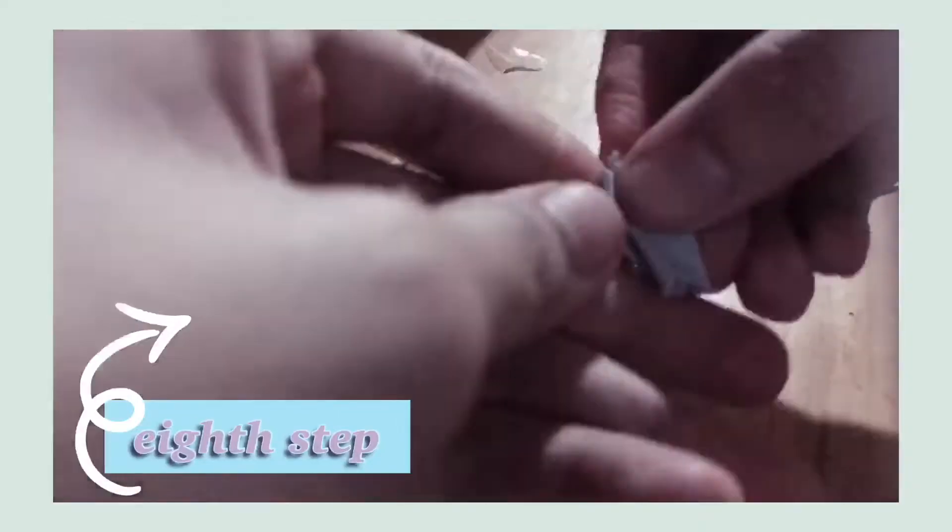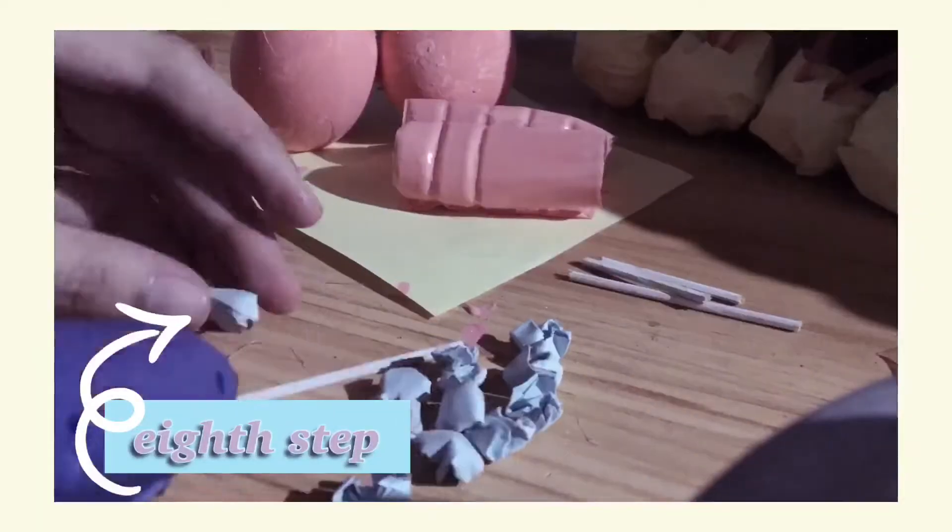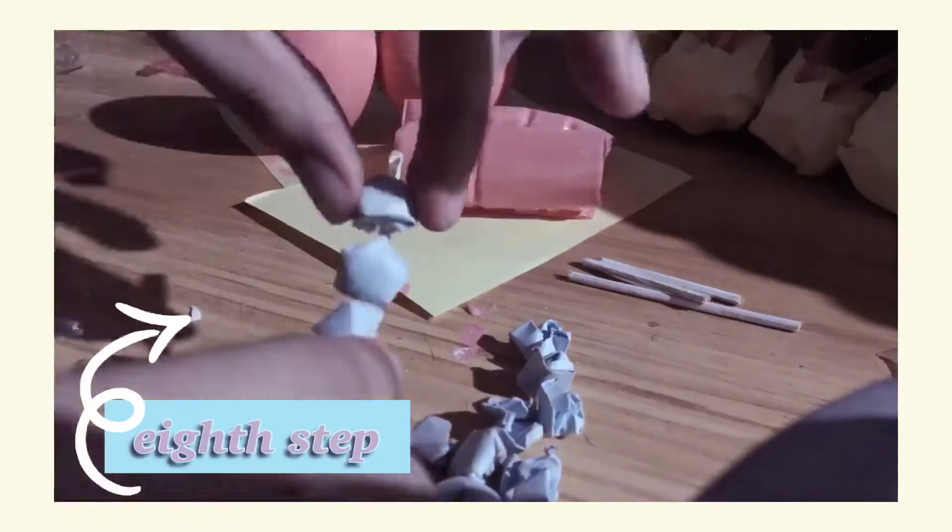Cut the sticks into smaller pieces and crumple the construction papers into smaller pieces also, and just glue it up.